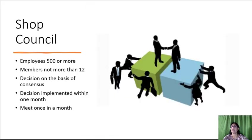Shop Council. Under this system, industrial units having 500 or more workers have to set up shop councils in all shops and departments. The members of management and of workers have equal representation. The total number of members should not be more than 12. The decisions of the shop council shall be on the basis of consensus and not by a process of voting.